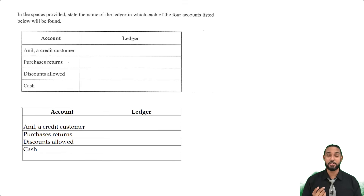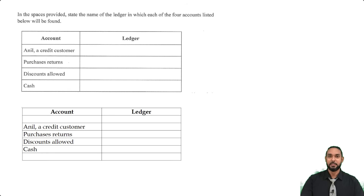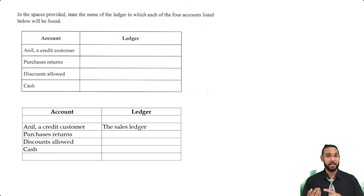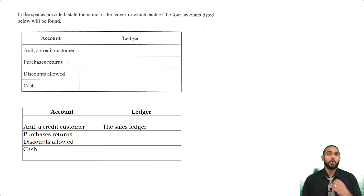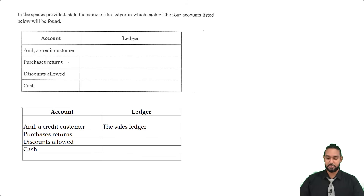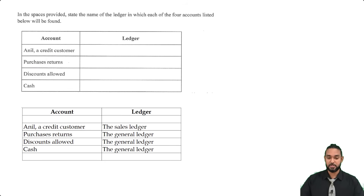So: Anil, as a credit customer, is a debtor and is found in the sales ledger. Purchases returns is neither a debtor's nor a creditor's account — it's a contra expense that decreases the expense of purchases, so it's in the general ledger. Discounts allowed is an expense account, also in the general ledger. Cash is an asset, also found in the general ledger.